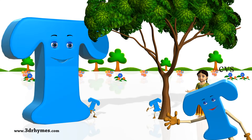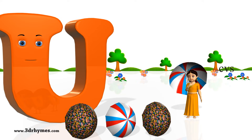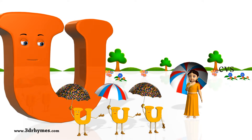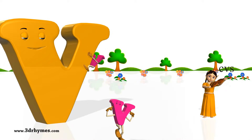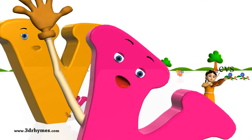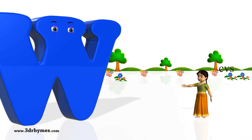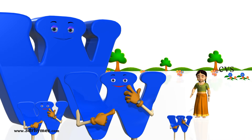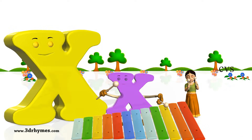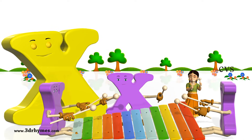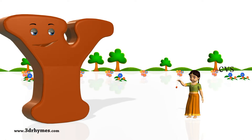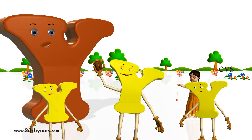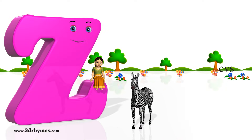U for umbrella, V for violin, W for watch, X for xylophone, Y for yo-yo, and Z for zebra.